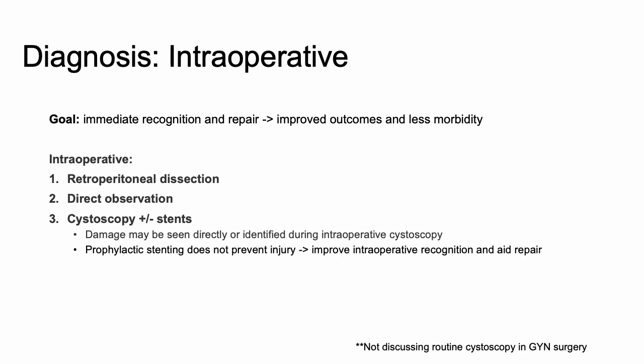Another method is cystoscopy, with or without stents. With a cysto, you can look for ureteral jets. Sometimes we'll place stents if we anticipate the ureter will be difficult to find or if we think the dissection will be difficult. Stenting doesn't in and of itself prevent injury, but it can improve intraoperative recognition of the ureter and aid in recognition of an injury and repair.